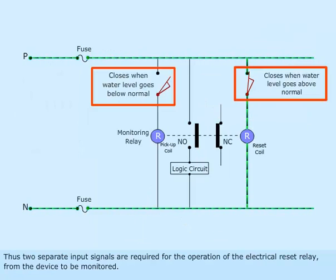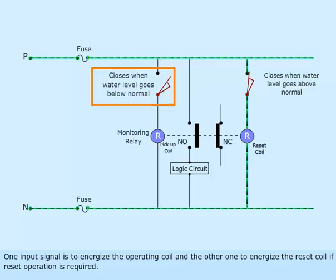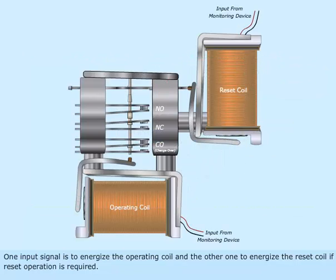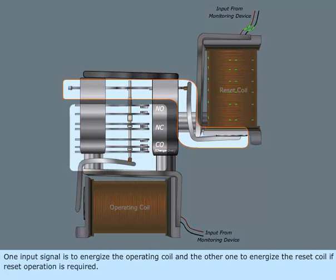Thus, two separate input signals are required for the operation of the electrical reset relay from the device to be monitored. One input signal is to energize the operating coil and the other one to energize the reset coil if reset operation is required.